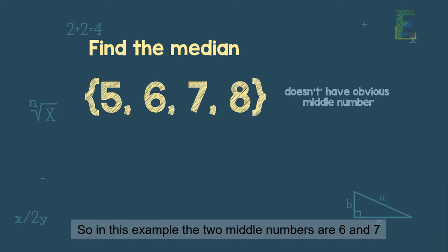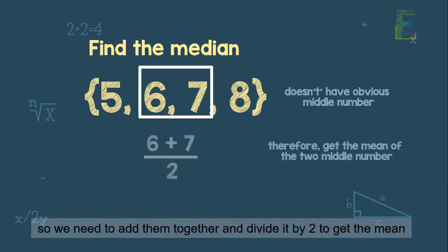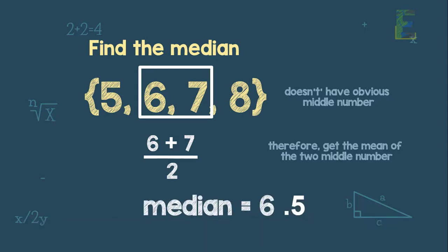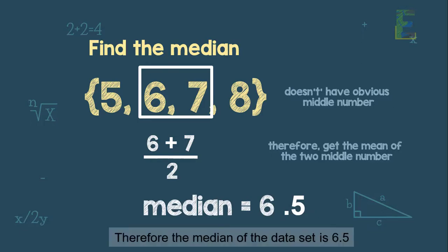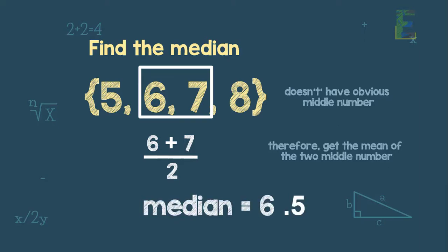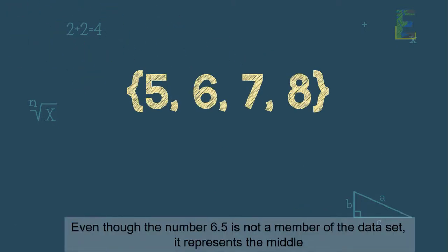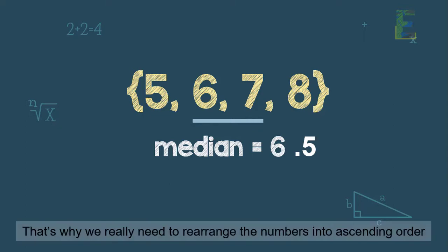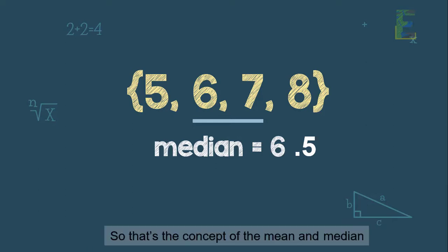So in this example, the two middle numbers are 6 and 7. So we need to add them together and divide them by 2 to get the mean. And the mean of those two numbers will be the median of this data set. Therefore, the median of the data set 5, 6, 7, 8 is 6.5. Even though the number 6.5 is not a number of the data set, it still represents the middle of the data set. Therefore, it will be the median of that data set. That's why we really need to rearrange the numbers into ascending order. So that's the concept of the mean and median.